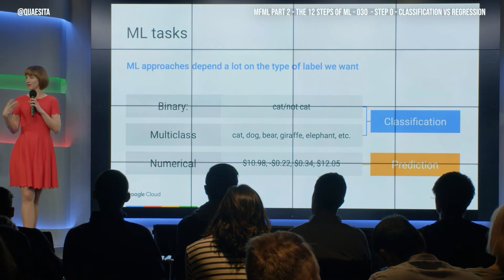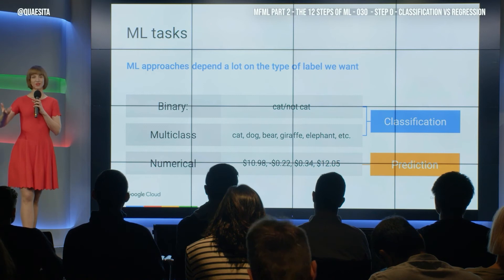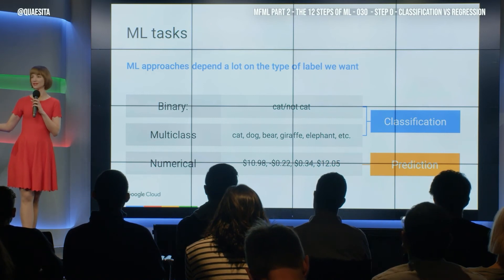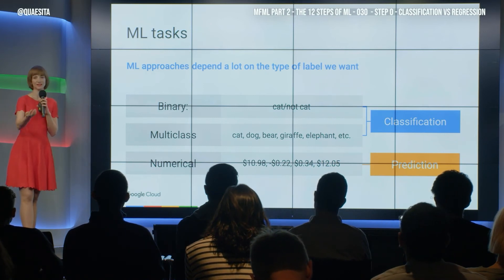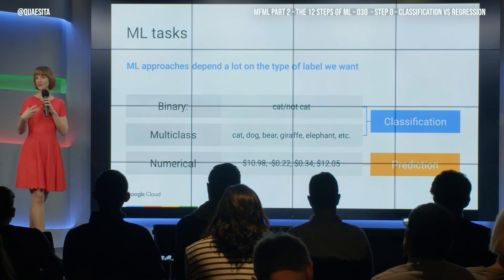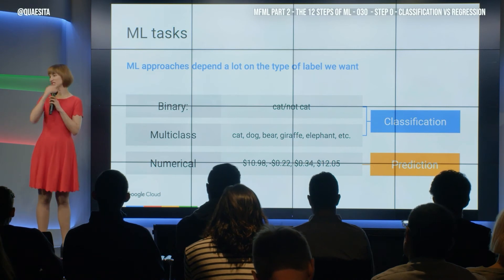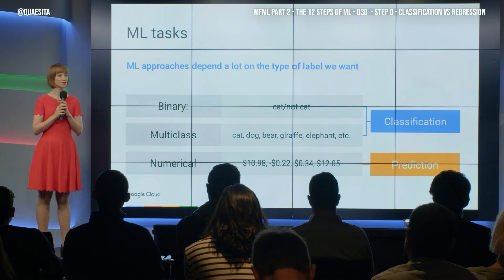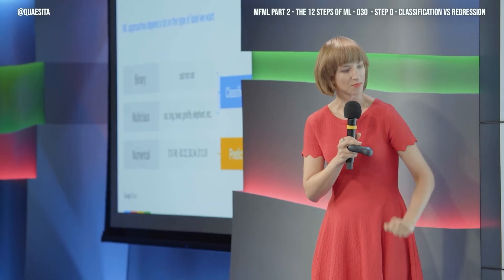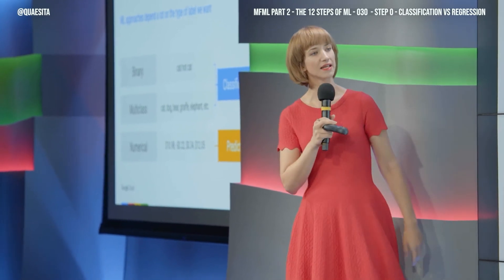I'm saddened by the use of the jargon 'regression' because that means all kinds of other things in all kinds of disciplines, and especially in statistics, which is far too close for comfort. Regression refers to a certain kind of algorithm that has to do with putting lines through stuff. So I prefer to say 'prediction' — in fact, prediction for all of it is fine.